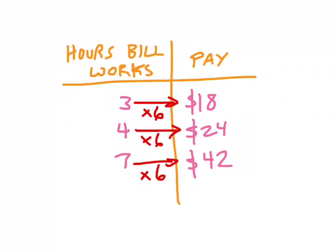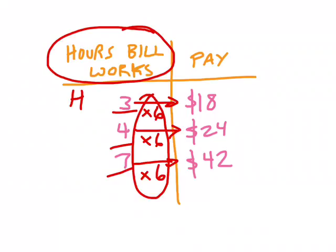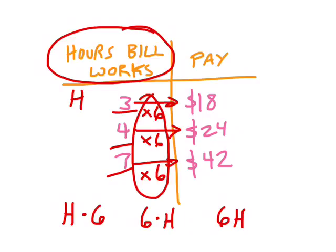I can then represent it as a variable expression. To do that I need to figure out what variable I'm working with. In this case the thing that's changing is the hours that Bill works, and I might represent that with the variable h. From there I think: what am I doing to h? Seems like I'm multiplying it by six — no matter what the value of h was, I multiplied it by six to get the pay. So my variable expression could be written h times six, or six times h, or six h, which also means six times h.